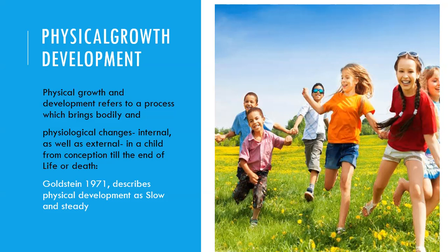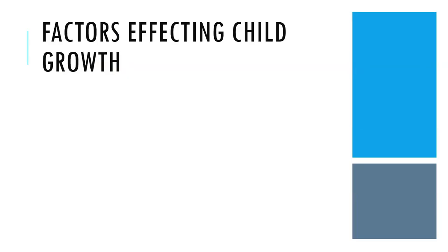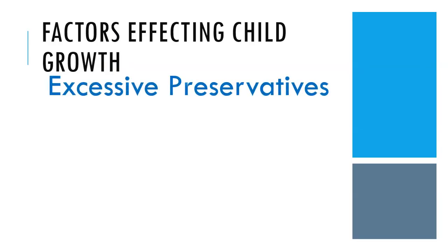Today, we see a trend where wealthy, well-off parents can afford food for their children without concern. However, they often give their children fast food, which contains many preservatives that increase health issues. When children consume such food, it can create anger and disturbance in them.